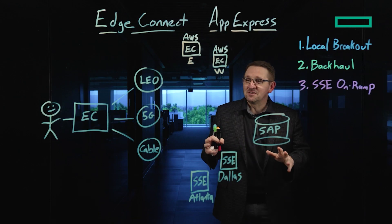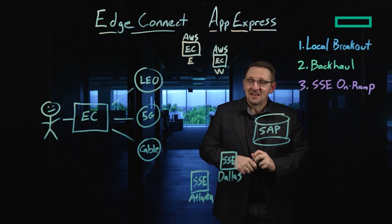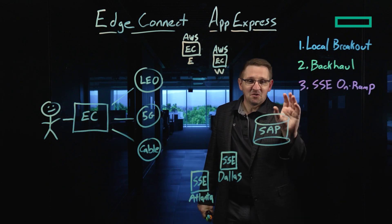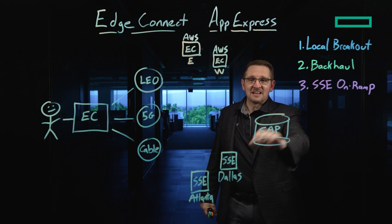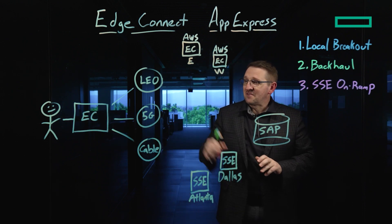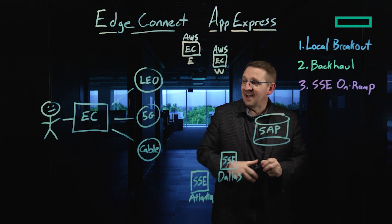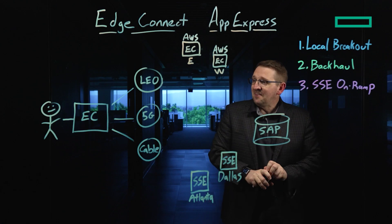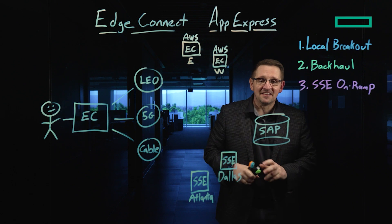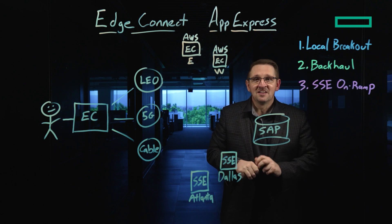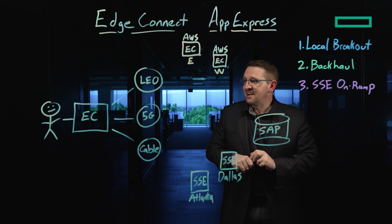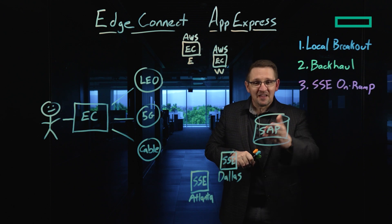The fundamentally important aspect of SD-WAN technologies is connecting users — this little guy over here — with critical enterprise applications. In this example, we've got a user located behind his EdgeConnect router, and that user wants to connect to an SAP server out on the internet. We have three different ways that user can connect to the SAP server.